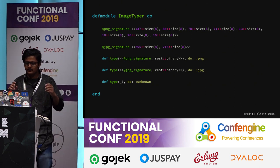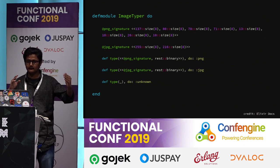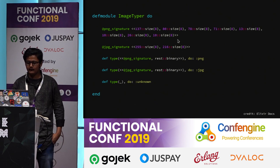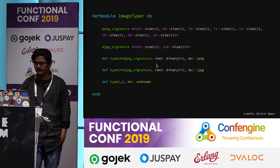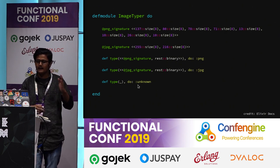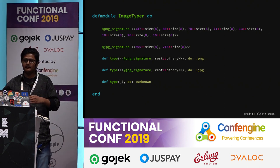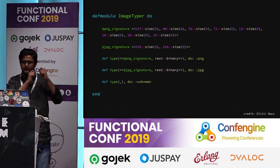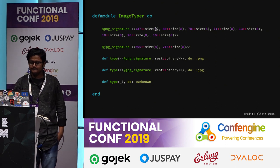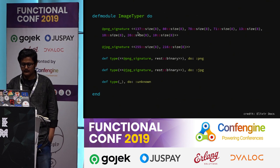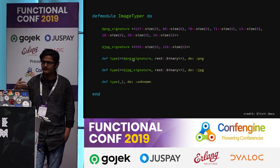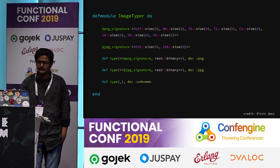For the PNG signature, you describe: the PNG file has this binary data description, and if the binary data corresponds to this particular string structure, it's going to match — this is a module attribute, so it's like a constant in Elixir. Here we are taking advantage of pattern matching in function definitions. When you try to read a file you can have an image type function, pass in a binary — for example a JPEG — and it will pattern match the first binary string and pick up whether it's a PNG or JPEG image, or something else.